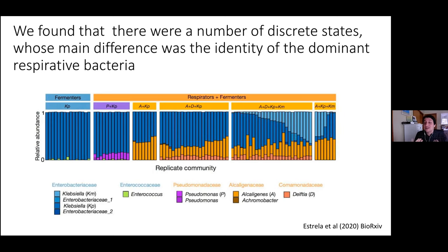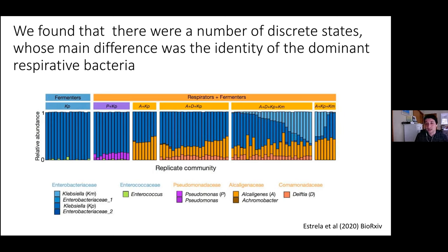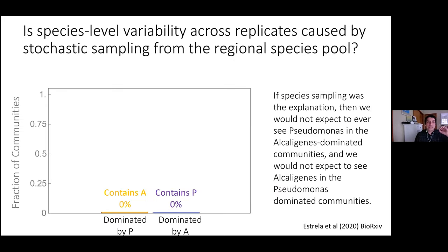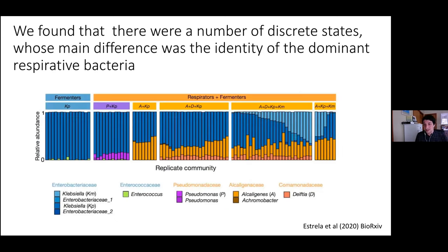The first-order effect is still the partition between these two functional groups. We know that all Enterobacteriaceae can grow on organic acids and do grow a little during the last ~30 hours when glucose is absent — it's just that the lion's share of glucose goes to Enterobacteriaceae and the lion's share of organic acids goes to Pseudomonadaceae or Alcaligenaceae.